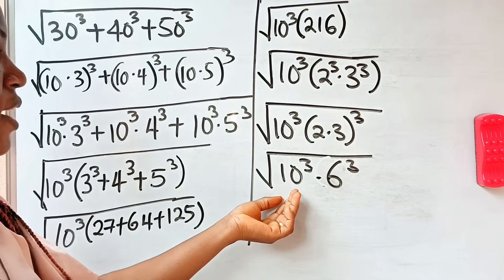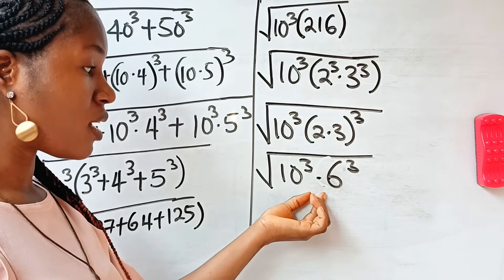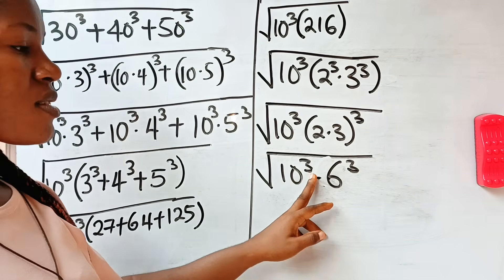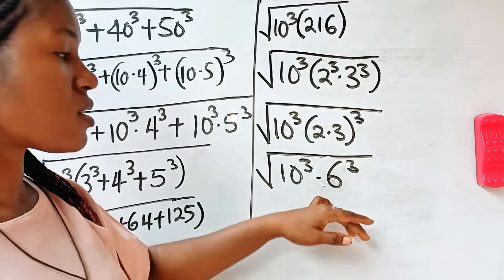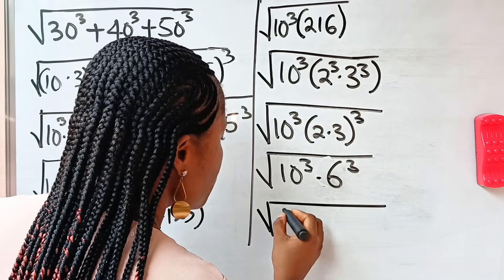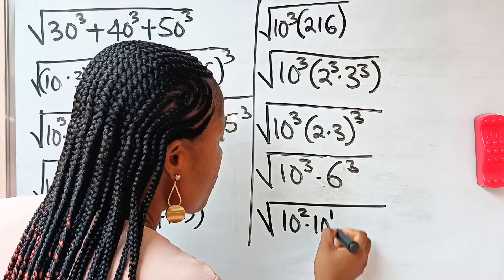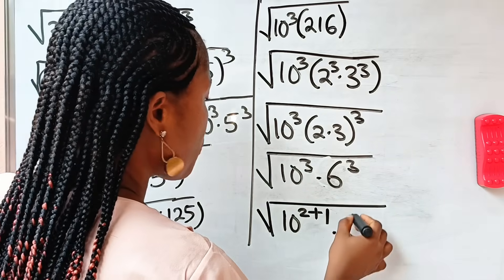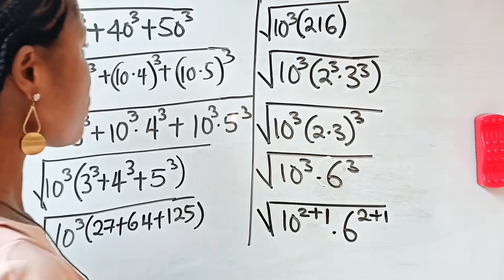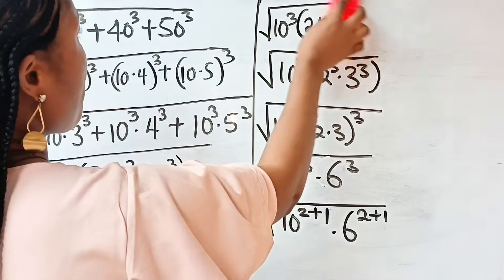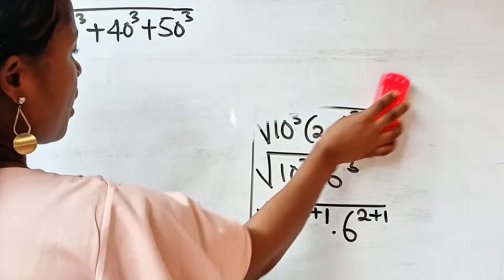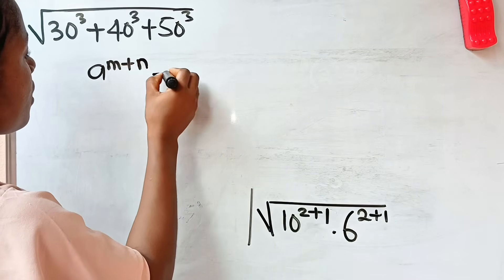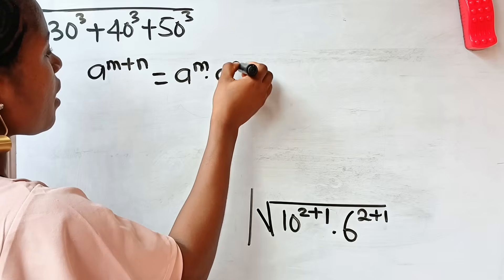We need to bring out squares from this so that we can cancel out the root sign. Now, 3 is the same thing as 2 plus 1, so let us express this that way. We have the square root of 10 raised to the power of 2 plus 1, then 6 raised to the power of 2 plus 1. Now remember that a raised to the power of m plus n is equal to a to the power of m multiplied by a to the power of n.